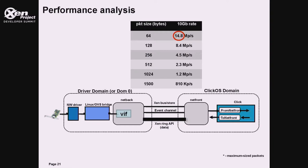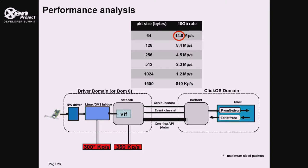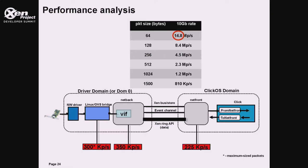When we put all of this together, there were several issues. For instance, OpenVSwitch could only forward 300,000 packets per second. When we plug in Netback and VIF, it forwarded only 350,000 packets per second. And when we put the full pipeline together with the MiniOS Netfront driver, we had only 225,000 packets per second — still only one-fourth of line rate for maximum-size packets.